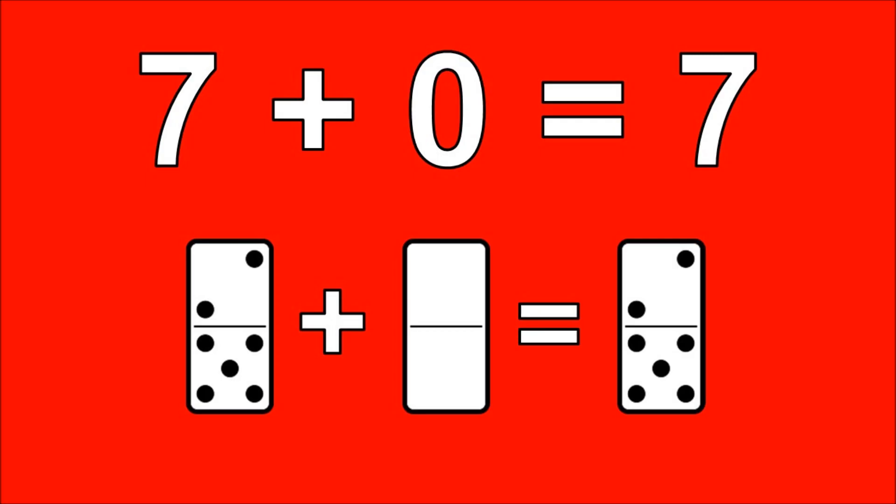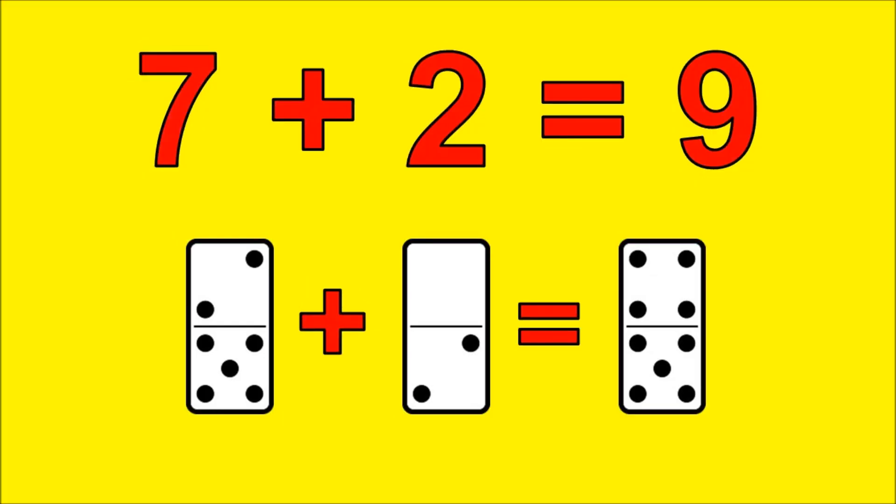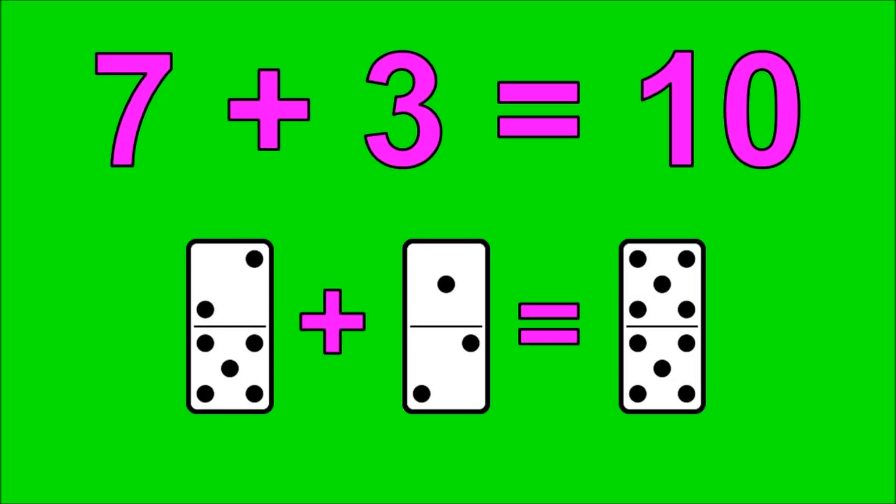7 plus 0 is 7, 7 plus 1 is 8, 7 plus 2 is 9, 7 plus 3 is 10.